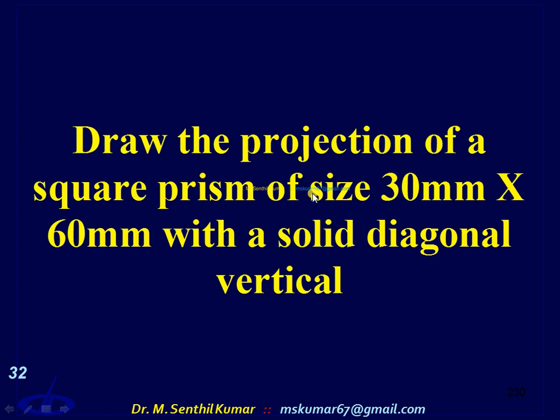For a square prism, there are four solid diagonals. The solid diagonal, in the sense, the top face is a square and the base is a square. So a diagonal line passing through one corner of the top face and it connects the other opposite corner in the base. That is nothing but the solid diagonal.